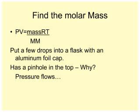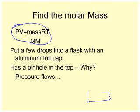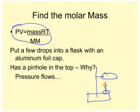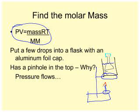To find the molar mass, the equation is PV = mass·RT / molar mass. The setup for this lab has a base with a ring stand, a Bunsen burner, a beaker of water, and a flask with aluminum foil on top.